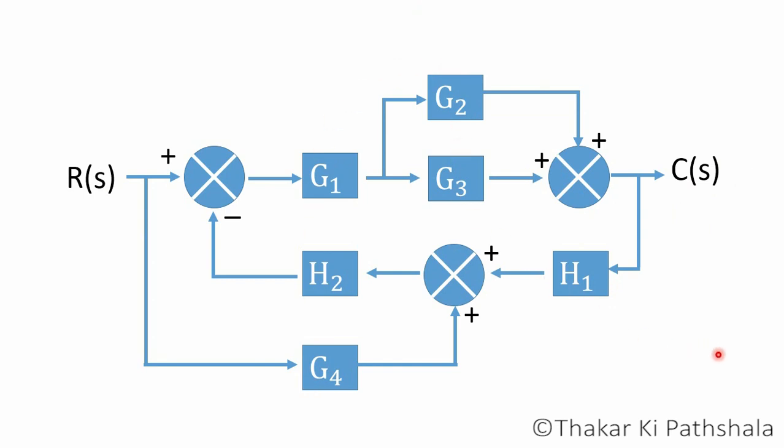So in order to reduce the block diagram and find the transfer function, there are certain guidelines or we can say steps to follow. The first step is to find out if there is any block directly in series or parallel. By looking at the following block diagram,